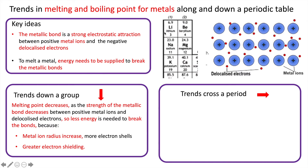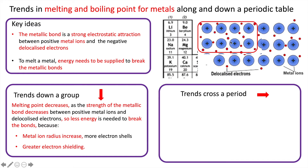Looking across a period: lithium has three protons and one outer electron which is delocalized and free to move, so one delocalized electron and a nuclear charge of plus three. Beryllium, by comparison in this diagram, has two outer electrons in its shell giving two delocalized electrons per ion, and a charge of plus four on the ion with one more proton. The metallic bond of beryllium is stronger than lithium because it has an extra delocalized electron and the charge on the ion is more positive, so with that stronger metallic bond its melting point will be higher.